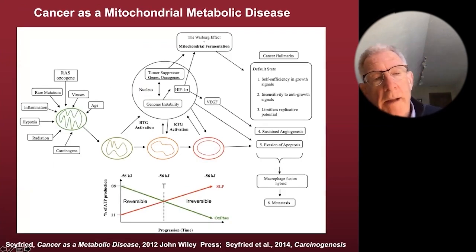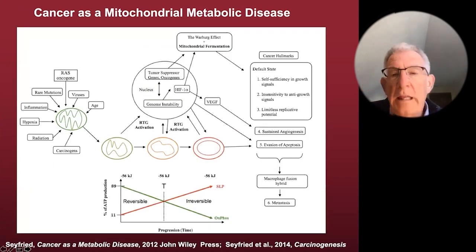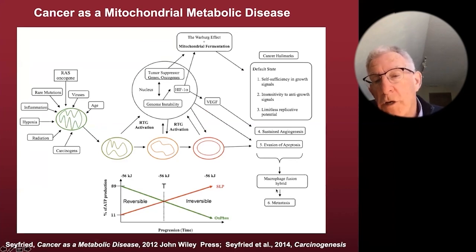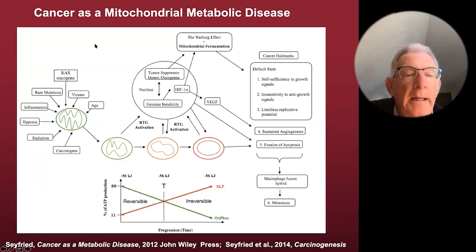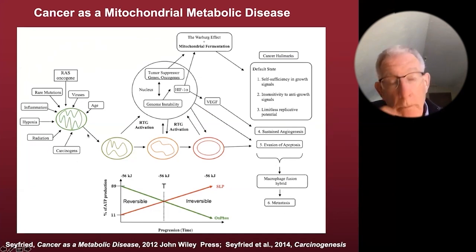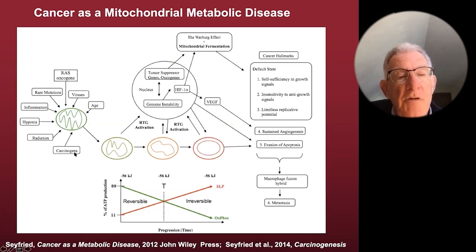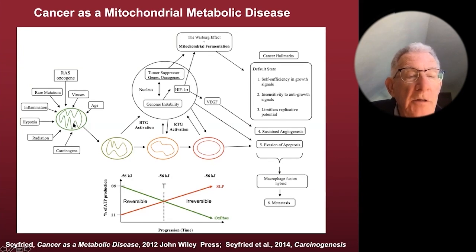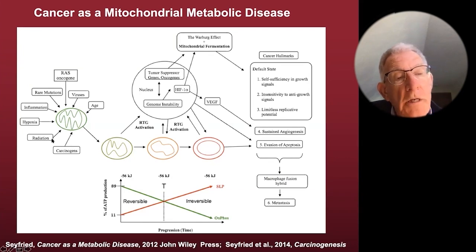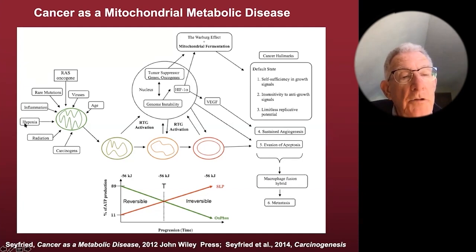Here's our diagram to encapsulate how we link the hallmarks of cancer — according to the gene theory of Hanahan and Weinberg — all of these hallmarks can be linked back to damage to the mitochondria. Let's look at the origin of cancer. Certain chemicals are carcinogens — like those in cigarette and tobacco smoke — and we know that they can damage mitochondria. People fear radiation because radiation can cause cancer by damaging mitochondria. Intermittent hypoxia, like sleep apnea or occlusion of a blood vessel, can also damage the mitochondria.